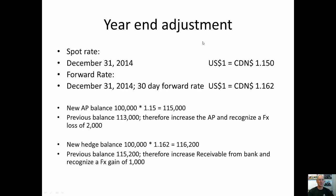The next thing we'll need to do is a year-end adjustment for our foreign exchange gain or loss. On December 31 we have a spot rate of 1.15 — you need the spot rate to adjust your accounts payable. Also on December 31 we have a 30-day forward rate of 1.162. This matches your January 31 payment date and settlement date, so this is the rate that we use to adjust our hedge.